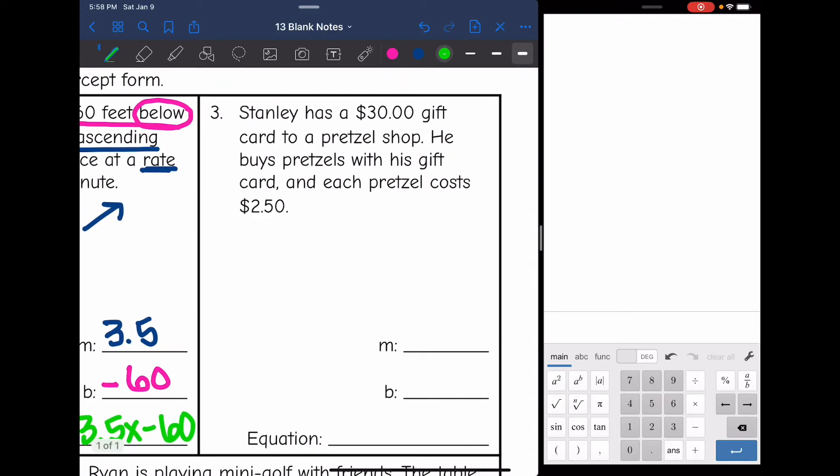Let's look at number three. Stanley has a $30 gift card to a pretzel shop. He buys pretzels with his gift card and each pretzel costs $2.50. So let's start with the y-intercept, the beginning point. He starts out with $30. He has a $30 gift card. He doesn't owe that to anyone. That was given to him. So that's a positive 30. Then the slope. There's a keyword that means slope: each. I know that's going to happen more than once. It's going to repeat. Each pretzel costs $2.50. That $2.50 is going to be taken away from his $30 gift card. So we're going to make that negative to represent that. So the slope is negative $2.50. So then that makes our equation y equals negative $2.50x plus $30.